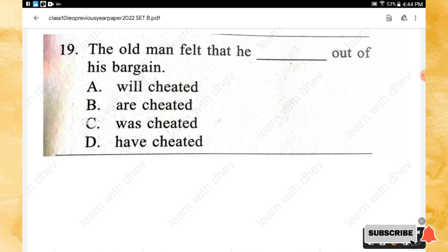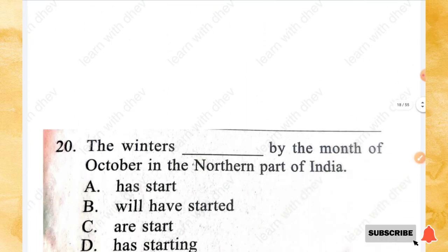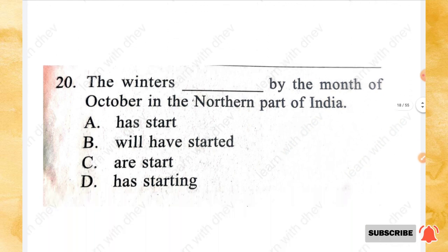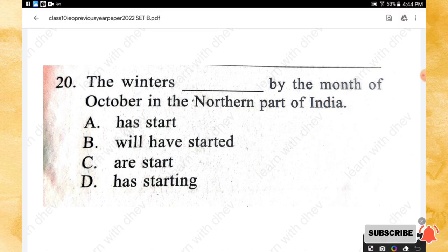Question 20: The winters _____ by the month of October in the northern part of India. Options: has start, will have started, or start, as starting. The right answer is option B — will have started.